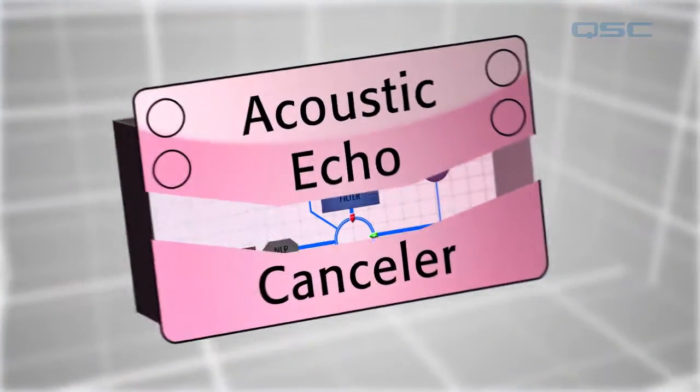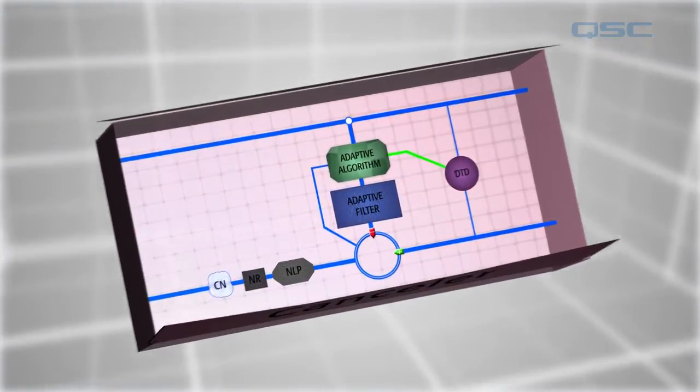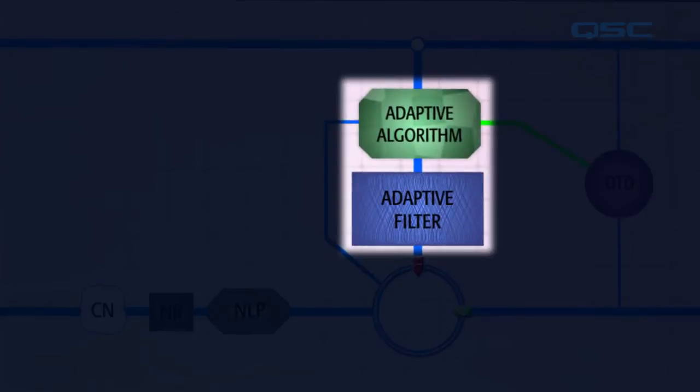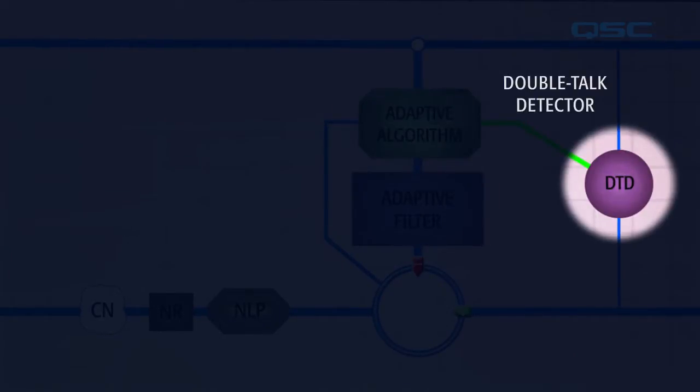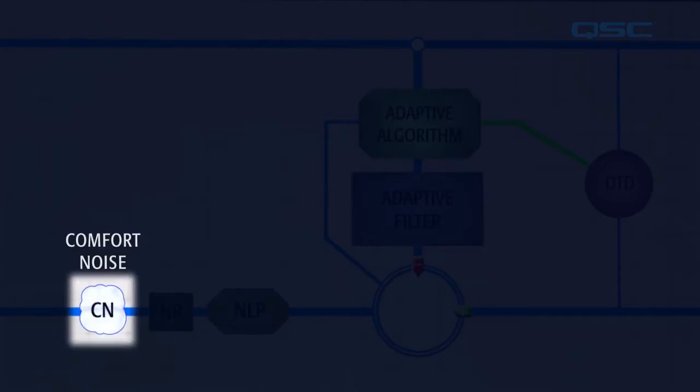Here's a diagram of this audio signal's round-trip journey. You'd never know it from the outside, but the acoustic echo canceler puts the audio signal through a lot of subsystems, including the adaptive filter and adaptive algorithm, double talk detection, non-linear processing, noise reduction, and comfort noise.